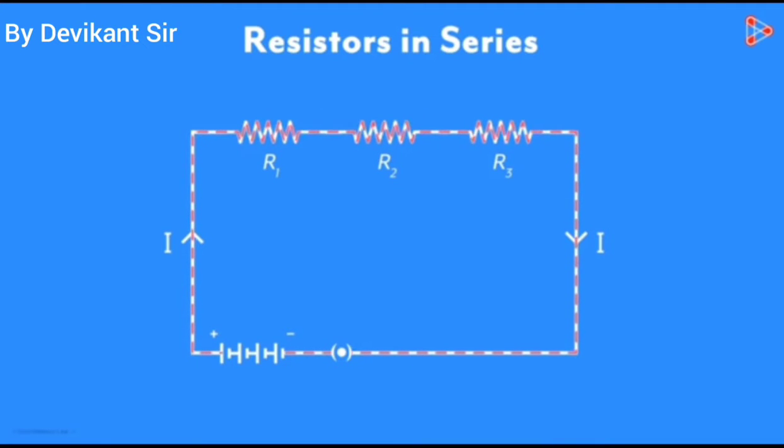Now if we change the position of ammeter it is found that there is no change in deflection of ammeter. Therefore current capital I will be the same which flows through the resistances R1, R2 and R3.